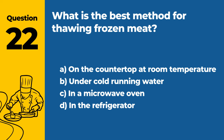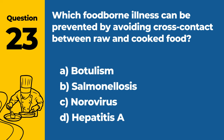Question 22: What is the best method for thawing frozen meat? A. On the countertop at room temperature. B. Under cold running water. C. In a microwave oven. D. In the refrigerator. Answer: D. In the refrigerator. The best method for thawing frozen meat is in the refrigerator, which allows for slow, safe thawing.